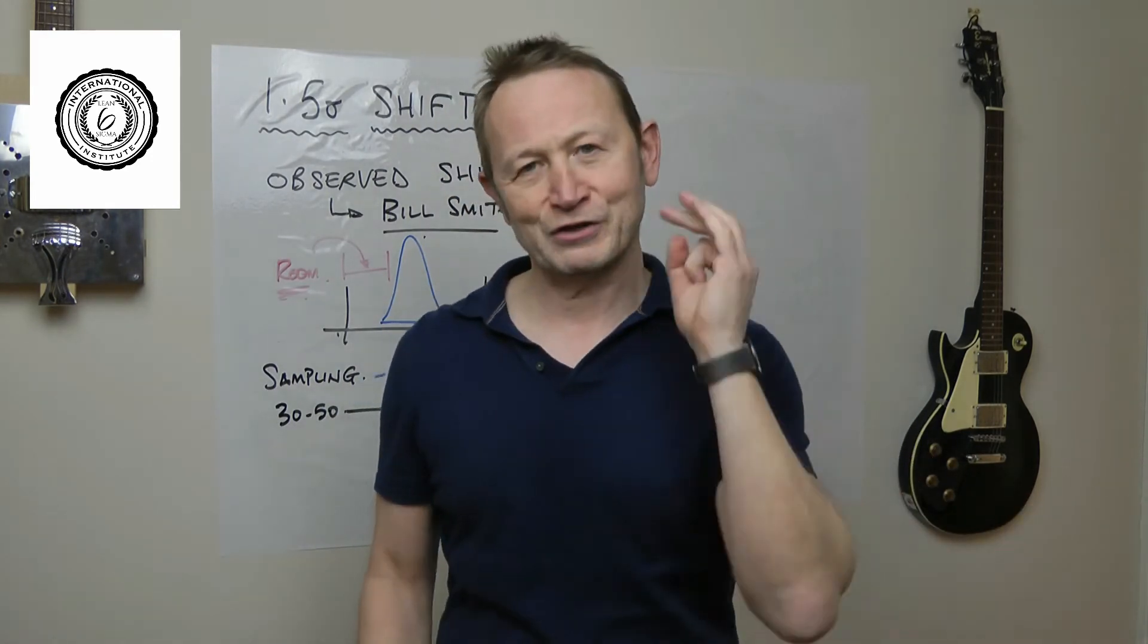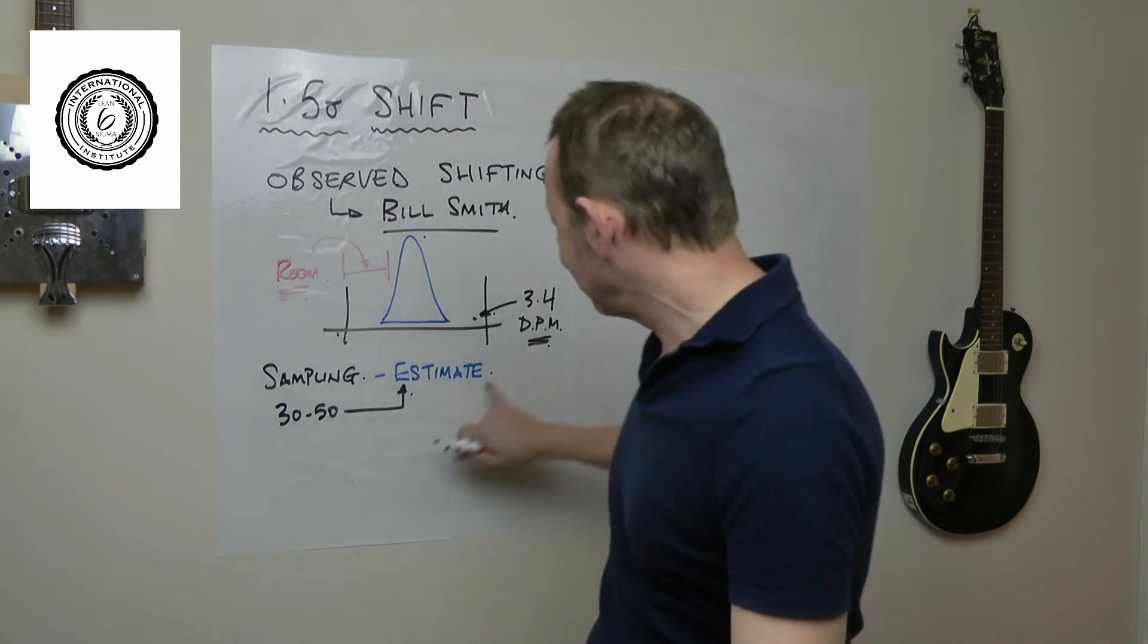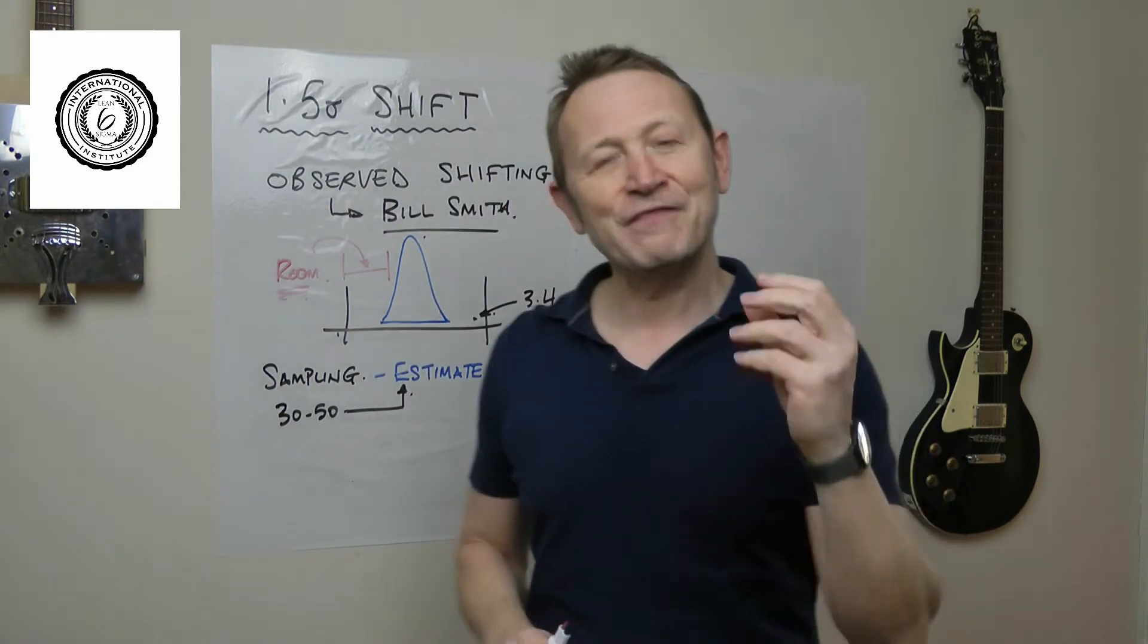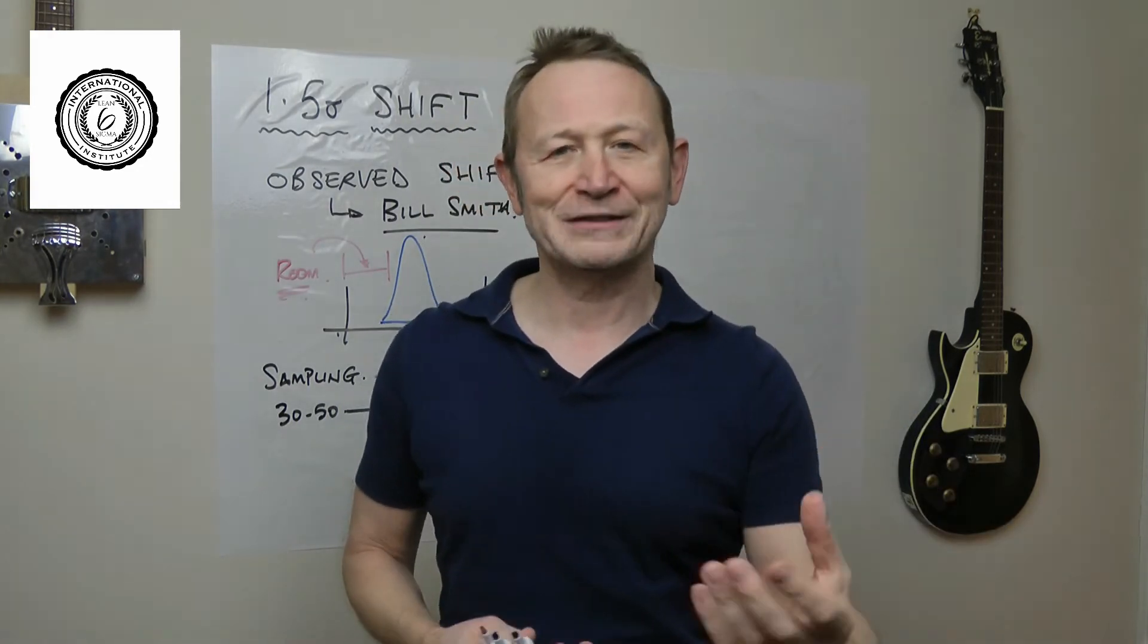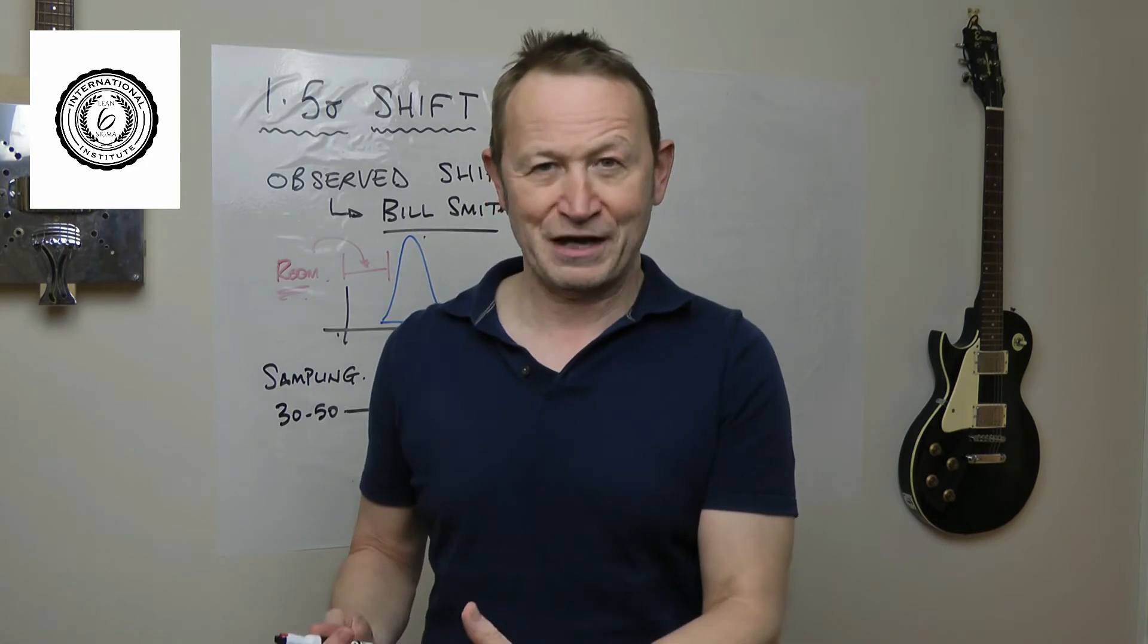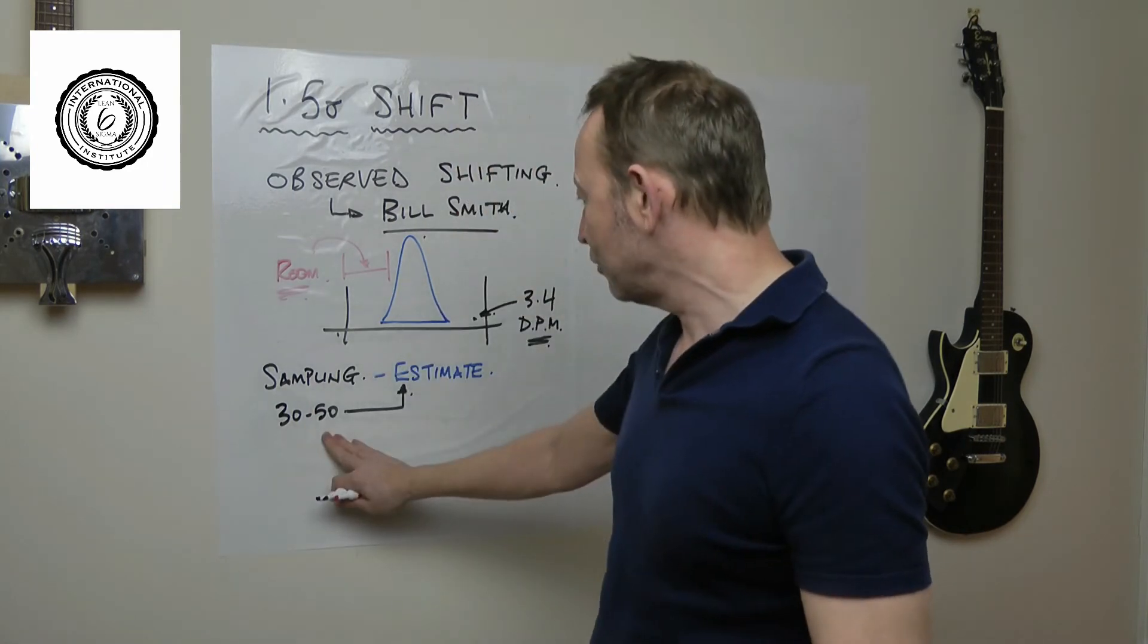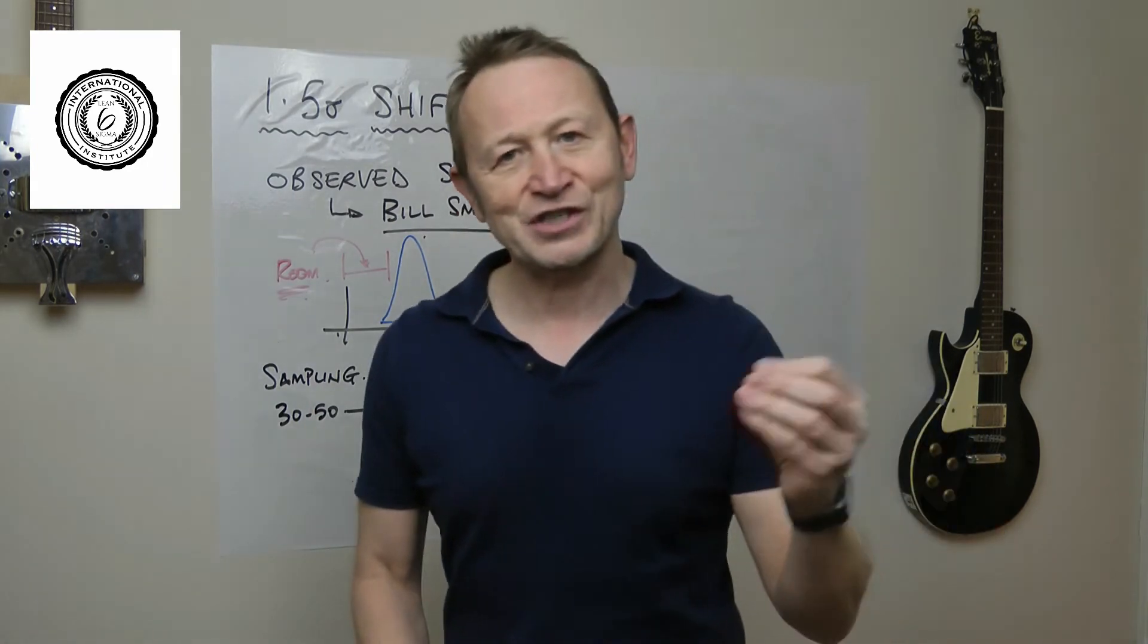That's where that 3.4 comes from. It's based on the idea of a Six Sigma process shifted across towards the tolerance. The worst case you're ever going to get is this number, and that was the number Motorola needed to compete with their competition. So one of the reasons for the shift: sampling error.